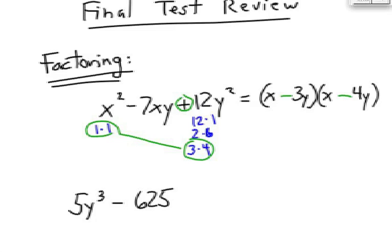Now let's double check. Let's look at the middle terms. What is negative 3y times x? Negative 3xy. What is x times negative 4y? Negative 4xy. It works.